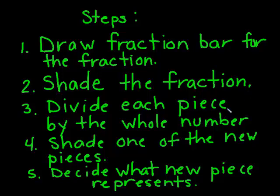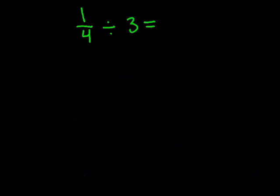Then we took our whole fraction and we divided each piece by the whole number, which was 2. We shaded only 1 of the new pieces, and then we decided what the new piece represented. So let's do 2 more examples.